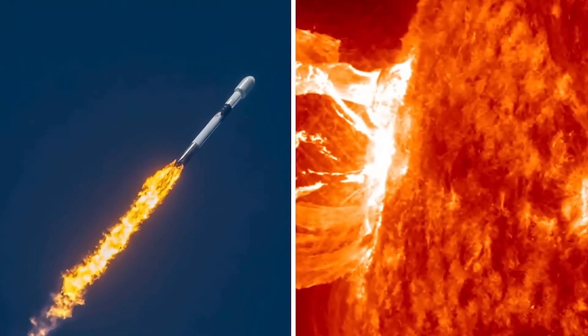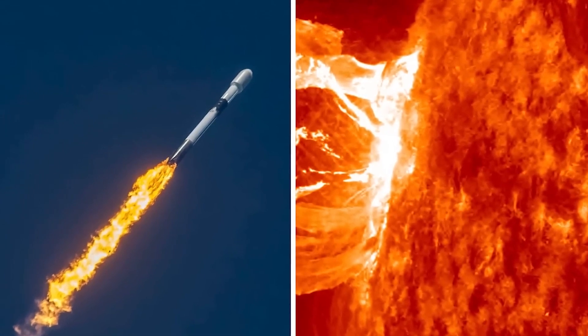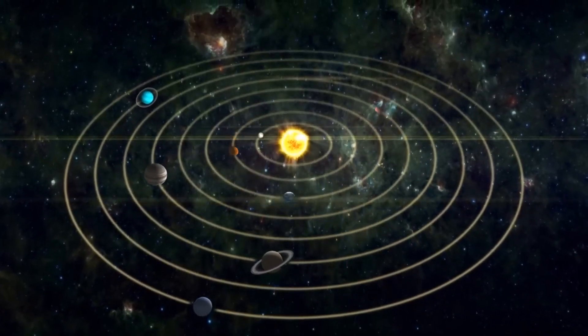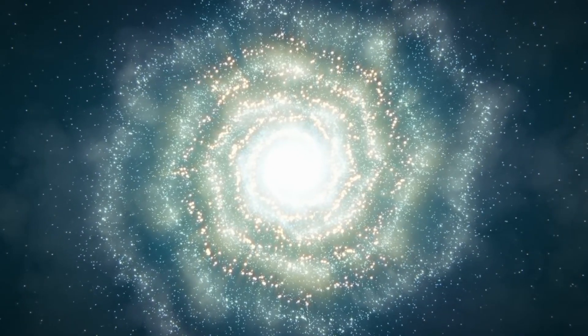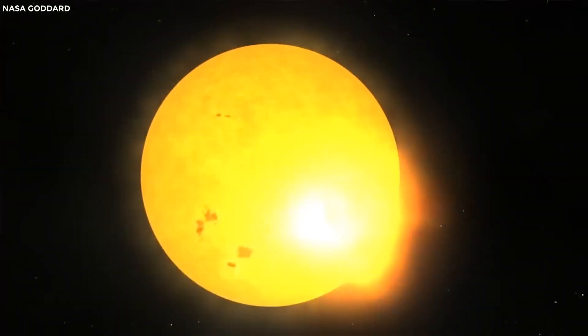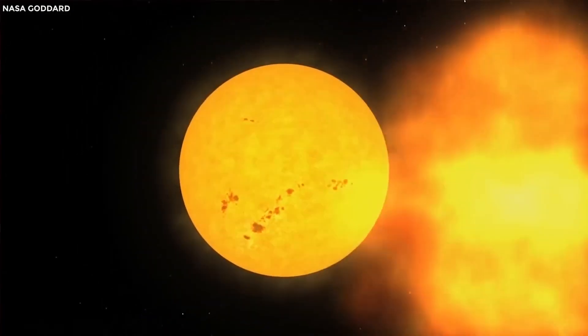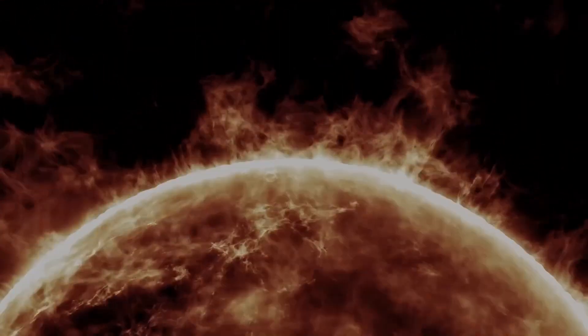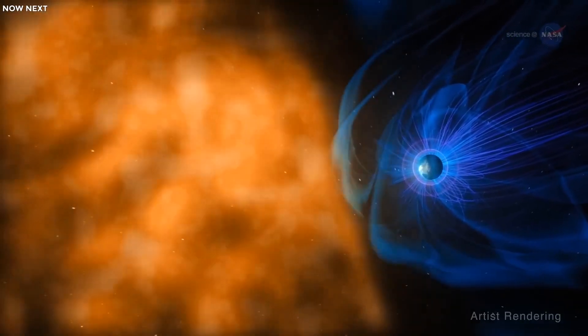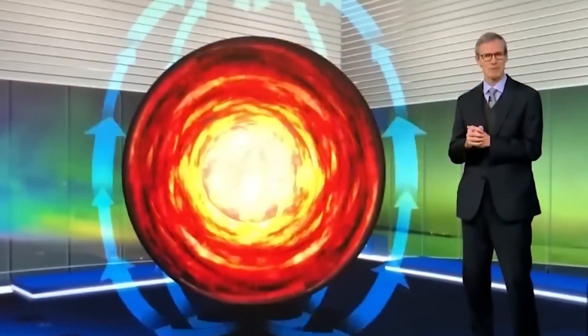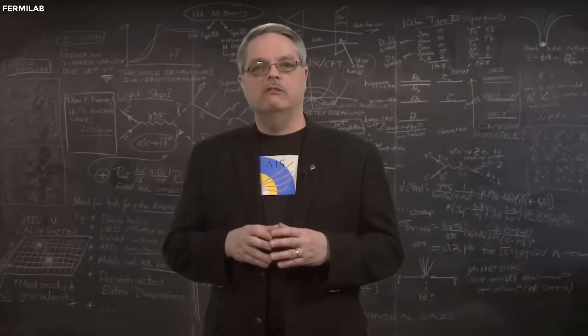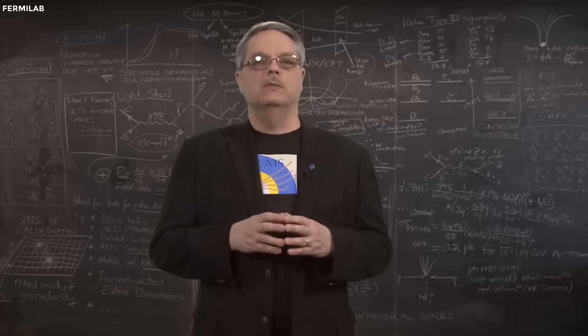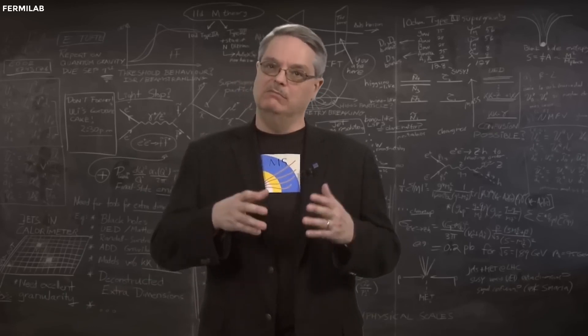Over the past year, there has been a significant increase in solar activity, including several powerful solar flares. This is because of a natural phenomenon known as the solar maximum. The Sun follows an 11-year cycle of solar activity, ranging from a solar minimum with fewer sunspots and less solar activity to a solar maximum with an increased number of sunspots and heightened solar activity. We are currently in a phase approaching the solar maximum, which explains the recent surge in solar activity.